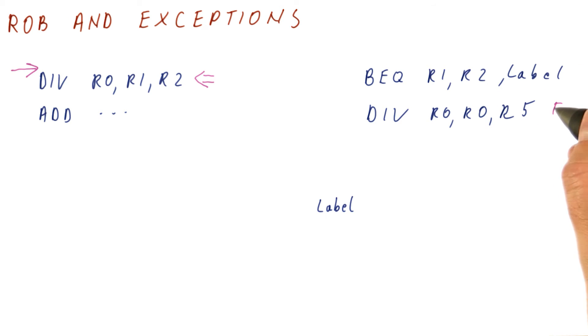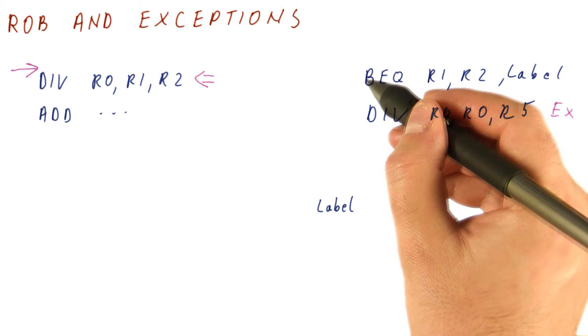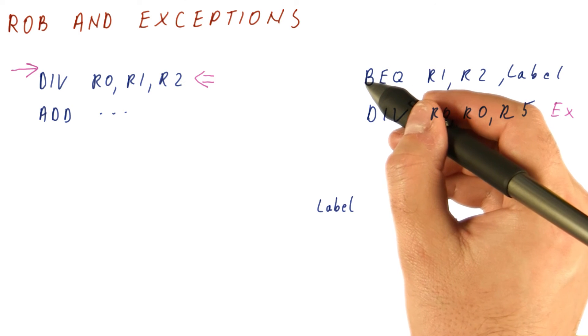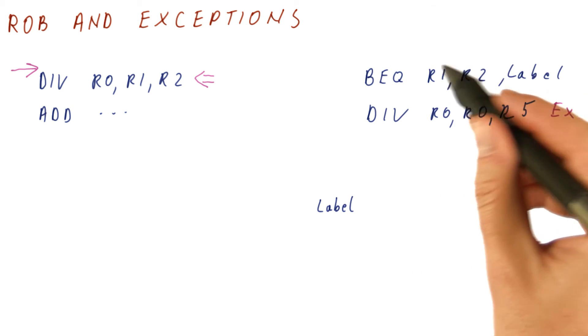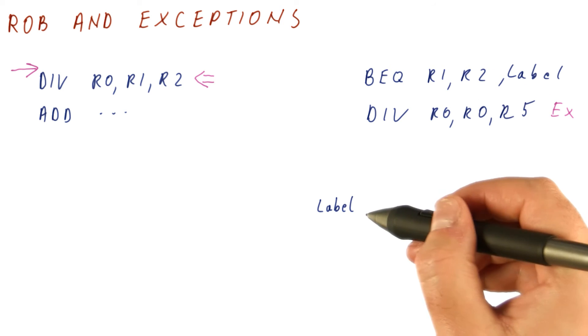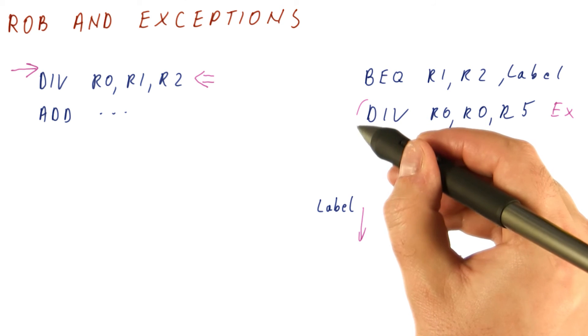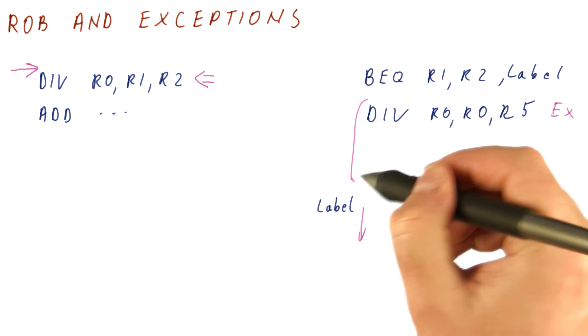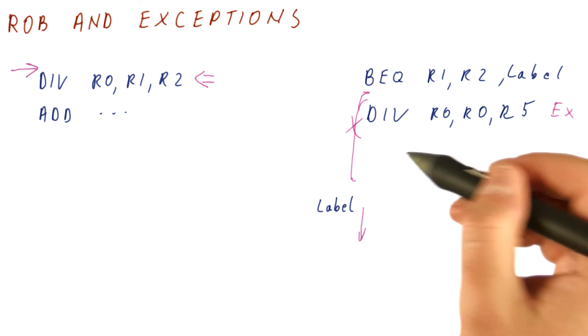So how does the ROB handle this? The result of this instruction is now marked as exception in its ROB. As the commit reaches the branch, depending on what kind of branch misprediction strategy we have, we figure out that the branch has been mispredicted and that we really wanted to jump to this label here. At that point, the divide and anything after is not committed. We haven't committed anything after the branch, so we can just cancel these instructions. They never reach commit.